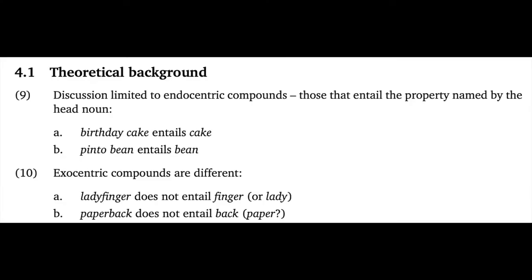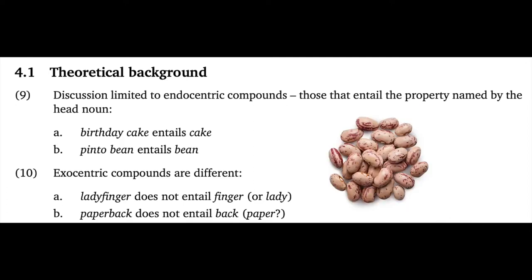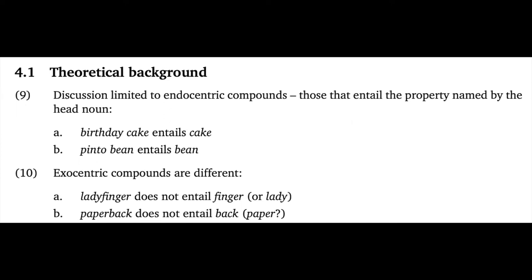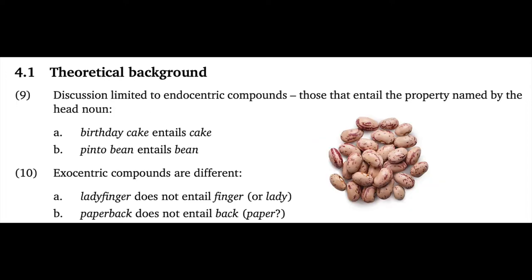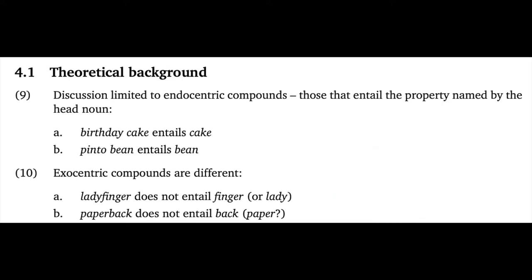This first bit of background framing just helps us understand the range of empirical phenomena the paper wants to tackle. There are lots of different kinds of compounds, and this paper looks at just one class: the endocentric compounds. The defining semantic feature of endocentric compounds, at least for our purposes, is that they entail the content of the head noun. So, for example, birthday cake is cake, and pinto beans are beans. I find it helpful to phrase this directly in terms of entailment, because entailment is really important in general and will help us throughout this discussion. You might not be sure exactly what pinto is doing as a modifier in pinto bean, but we can still say that a pinto bean is a kind of bean — that is, pinto bean entails bean.